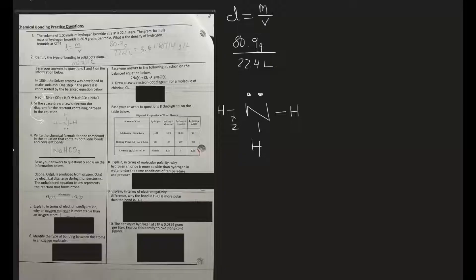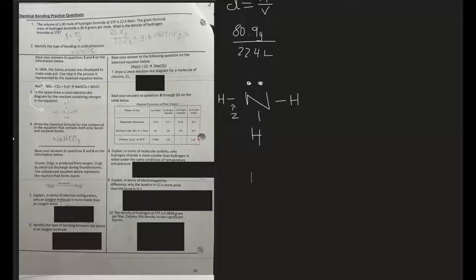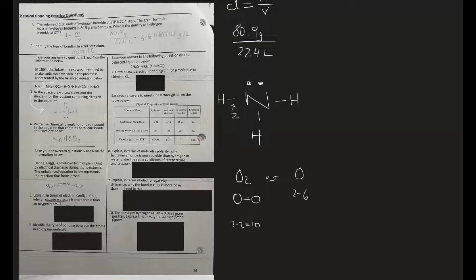Number five: Ozone O3 is produced from oxygen O2 by electrical discharge during thunderstorms. Explain in terms of electron configuration why an oxygen molecule is more stable than just an oxygen atom. An oxygen atom's electron configuration is 2-6, so it's unstable. For our oxygen molecule, you have your two oxygens. It has 12 total valence electrons. I need to add two bonds because if I have 12 and I have one bond, that's 2 from 12 equals 10, so I can't share 10 equally in terms of pairs between these two because 10 divided by 2 is 5.